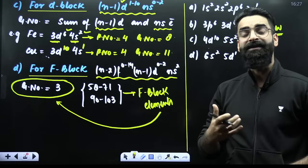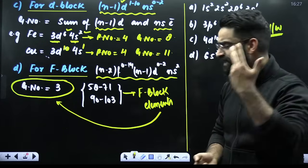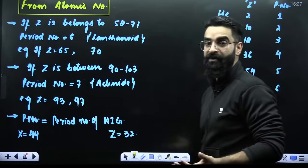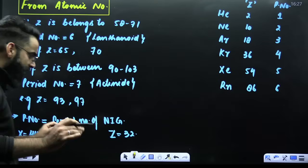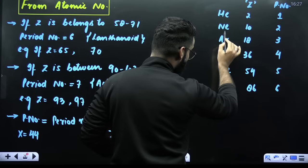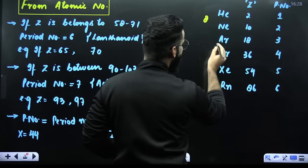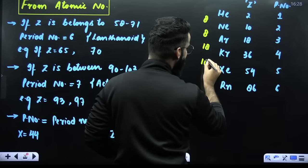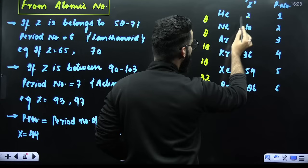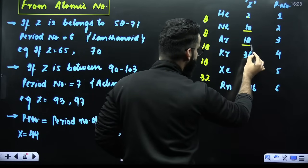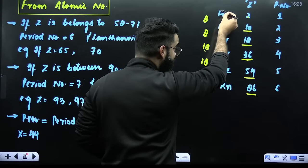Now, if the electronic configuration is not given and you are given the atomic number instead, how do you calculate the group number and period number? First, remember the noble gases — helium, neon, argon, krypton, xenon, radon — and their atomic numbers. Using the magic numbers 8, 8, 18, 18, 32: helium is 2; neon is 2+8=10; argon is 18; krypton is 36; xenon is 54; radon is 86.